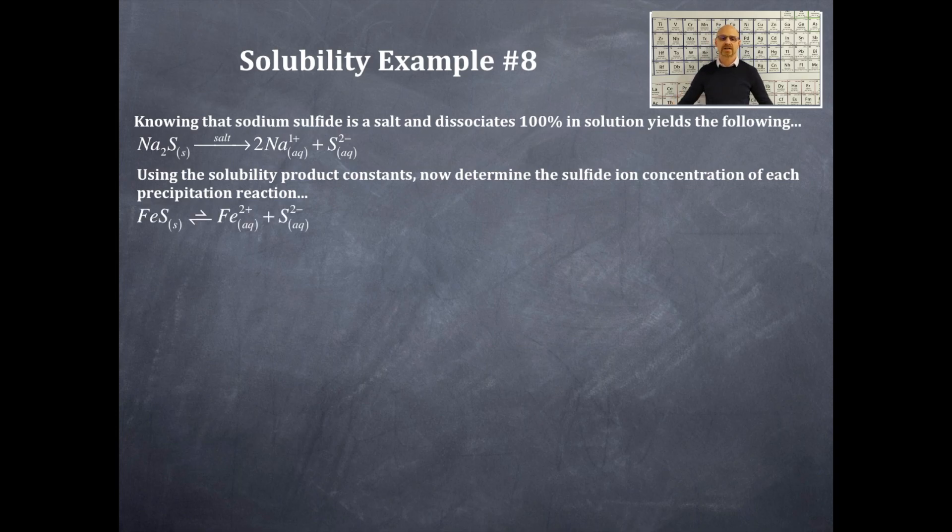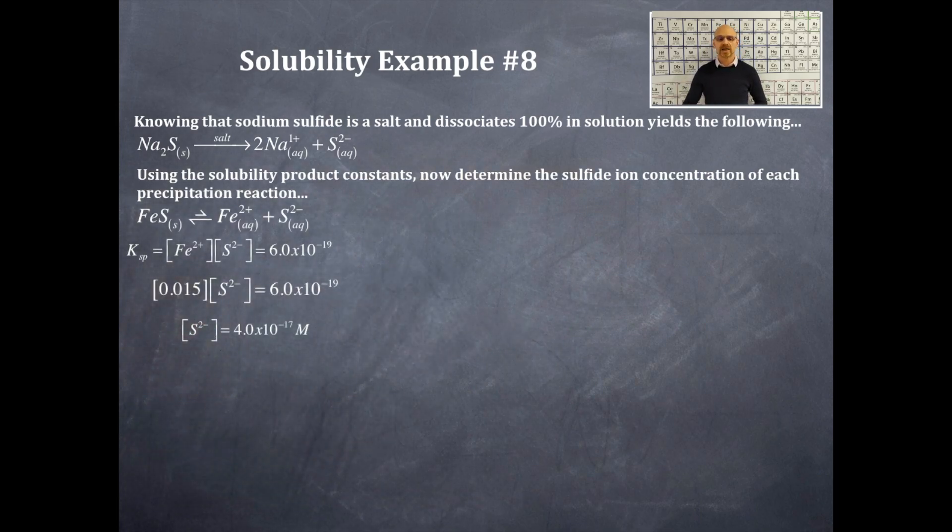Okay, so for the ferrous sulfide, I got ferrous sulfide yielding ferrous ions and sulfide ions. That will give me a KSP that we already aforementioned, and that is products over reactants with stoichiometric coefficients as exponents to determine that KSP equation. So, the KSP is equal to 6.0 times 10 to the negative 19, that's the product of the ferrous ion and the sulfide ion. Okay, I'm going to plug in the iron ion concentration that I have in my well water and solve for the sulfide ion concentration. That would be right here at 4.0 times 10 to the negative 17 molar.